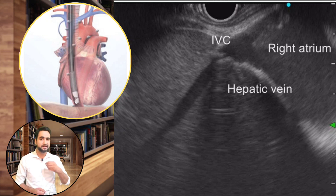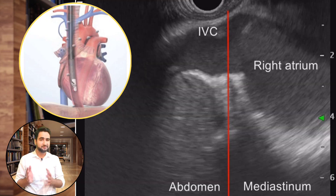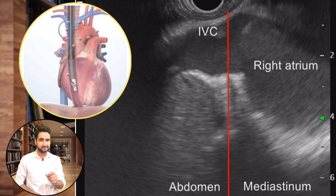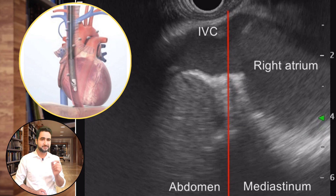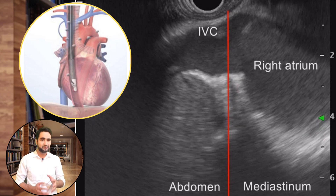Now start following the inferior vena cava towards the superior side while slightly withdrawing the scope. You can observe the inferior vena cava passing through the diaphragm. You can see a vertical red line — this is the boundary between the abdomen and the mediastinum. In other words, it is a boundary between the structures in the range of the tip beam and the structures in the range of the shaft beam. That's why in the EUS image, the mediastinum will be in the view of shaft beams, on the right side of this border.